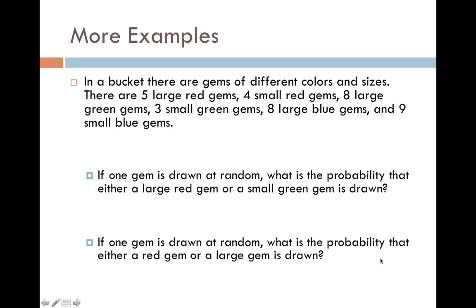All right. We're going to change the scenario and look more at these not and or problems. So in this case, we're going to have a bucket with different colored gems. 5 large red gems, 4 small red gems, 8 large green gems, 3 small green gems, 8 large blue gems, and 9 small blue gems.